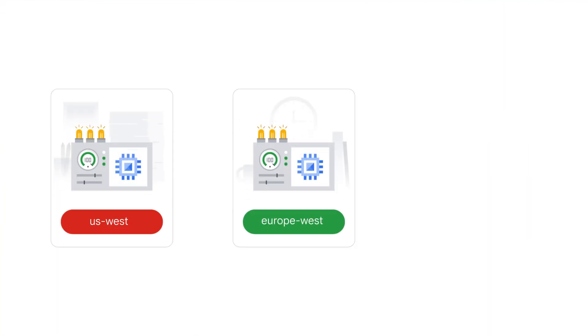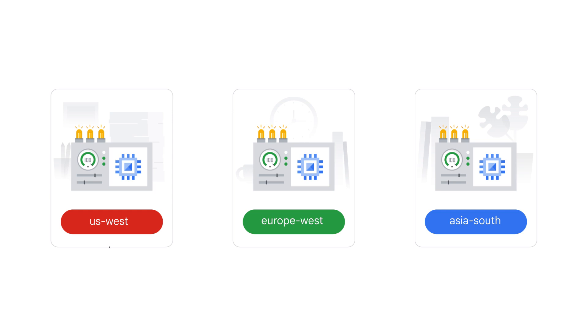All right, starting to see what you're talking about. But what about communications across regions? Within your VPC, everything uses private IP addresses. Your VMs can be thousands of miles apart, but they chat as if they were in the same room, making it secure and shareable.